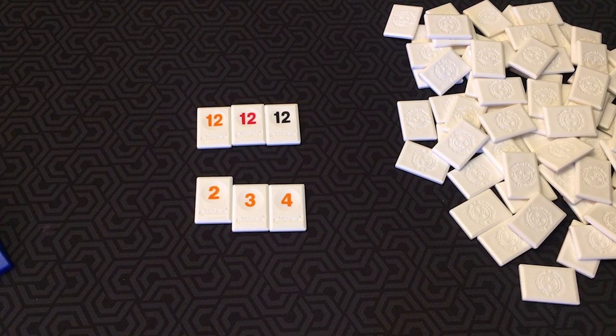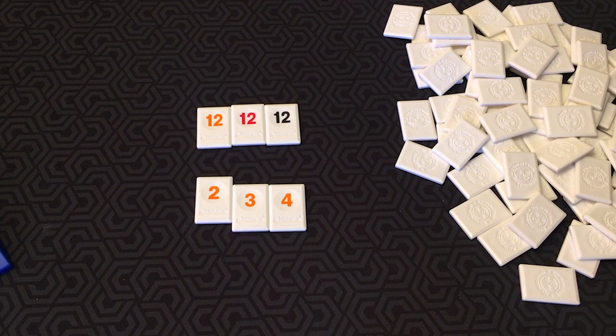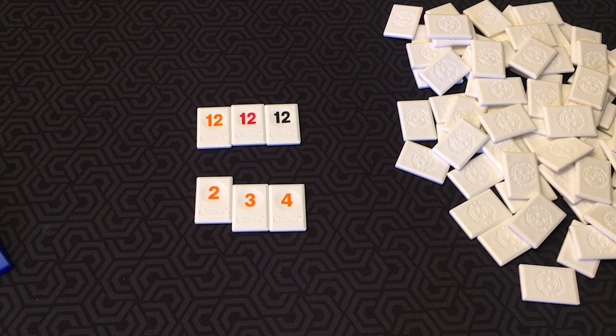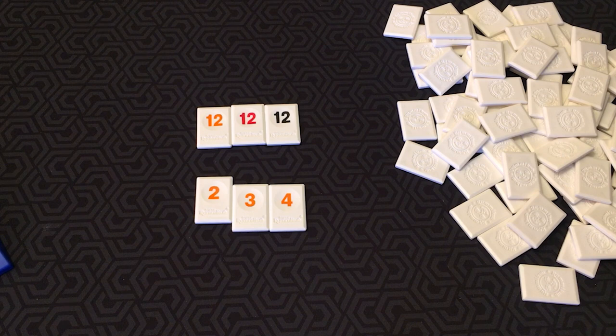Now each tile is worth its face value. In order to make an initial meld, each player must place tiles on the table in one or more sets that total at least 30 points. These points must come from the tiles on each player's rack. For their initial meld, you may not use tiles already played on the table.